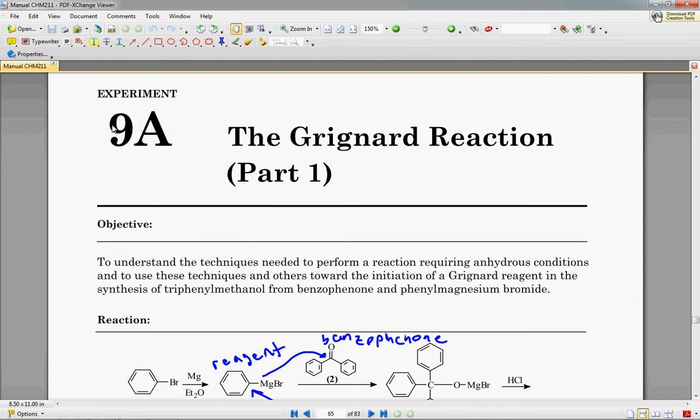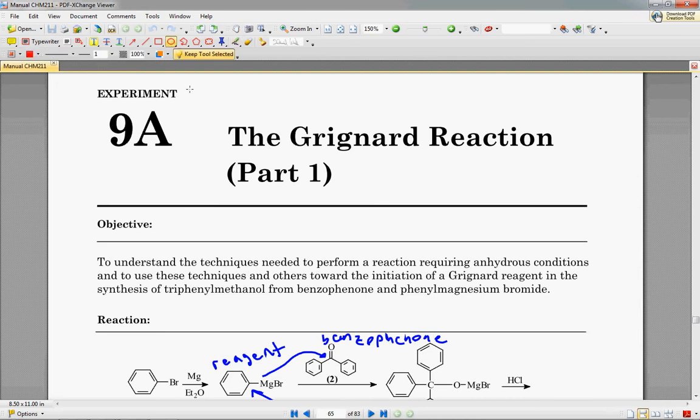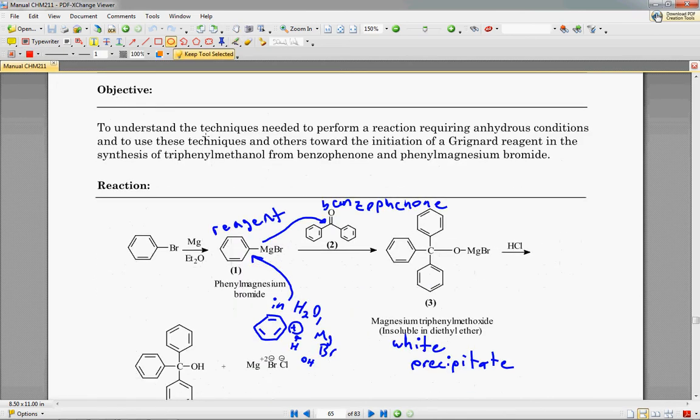So this week we are going to do the Grignard reaction. This is a very difficult reaction to accomplish because it has to have absolutely pristine, waterless conditions. And as you all know, Charleston is very humid, so it really is going to be difficult to say the least.